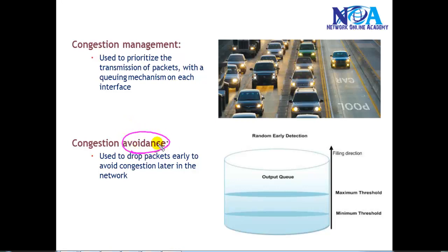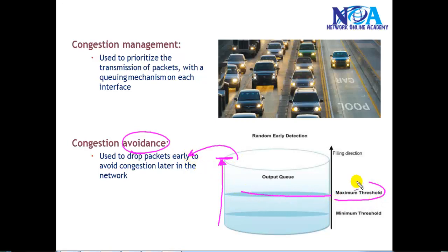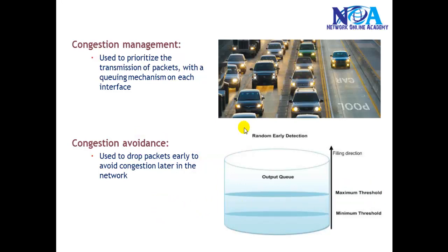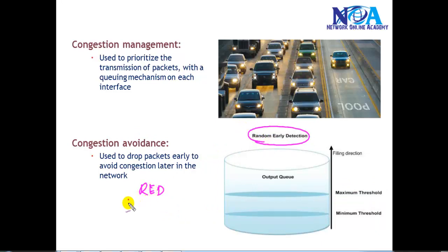There is one more mechanism called congestion avoidance. Rather than waiting until the network is fully congested and starts dropping packets, before it reaches the maximum threshold value it randomly detects and drops low-priority packets. That is what we call the congestion avoidance mechanism. We have RED (Random Early Detection) and WRED (Weighted Random Early Detection) mechanisms, which are congestion avoidance mechanisms that drop packets before the network gets congested.